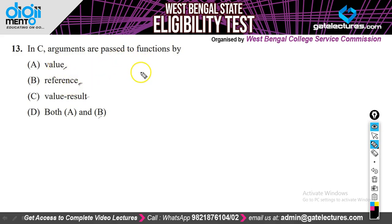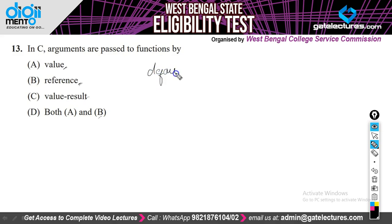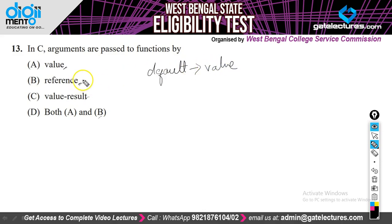But if they are asking how arguments are passed to functions by default, then we will choose the default value. If we are not explicitly mentioning anything, then C uses the call by value technique, not the reference technique.